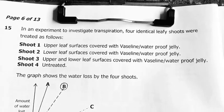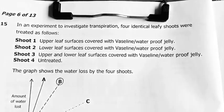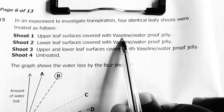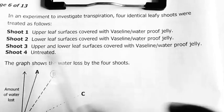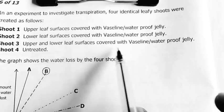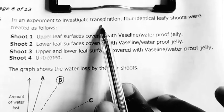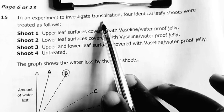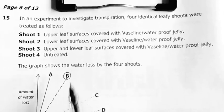The next question, question 15. An experiment to investigate transpiration. Four identical leafy shoots were treated as follows. The first shoot had its upper surface covered with petroleum jelly or Vaseline, which is waterproof. The second one, lower surface covered with Vaseline. Third shoot, upper and lower surfaces covered with Vaseline. Then the last one is untreated. We're investigating transpiration, which is the loss of water by plants mainly via their leaves to the atmosphere. Then the graph shows the water loss by the four shoots. Question follows, which line shows the result for shoot one?